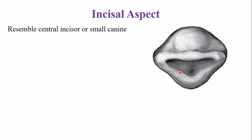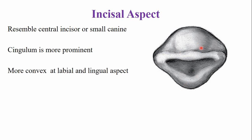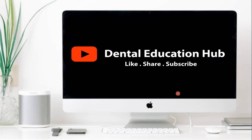From the incisal aspect, the tooth resembles a small central incisor or a canine. The cingulum is more prominent and overall the tooth is more convex, both from the labial and lingual aspects. This concludes the brief description of the important landmarks on the maxillary lateral incisor. If you liked this video, please give feedback in the comments, and thank you very much for watching.